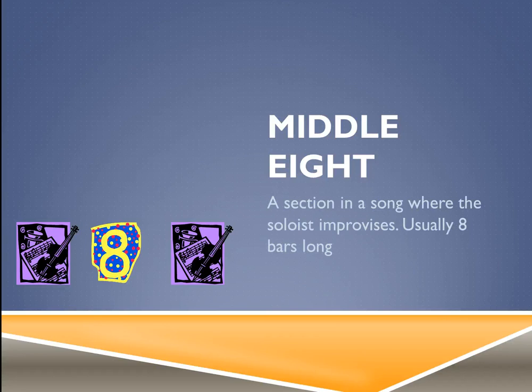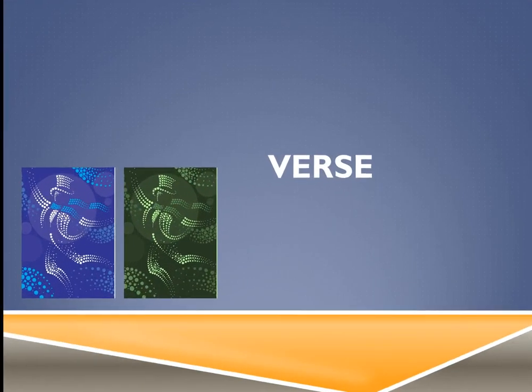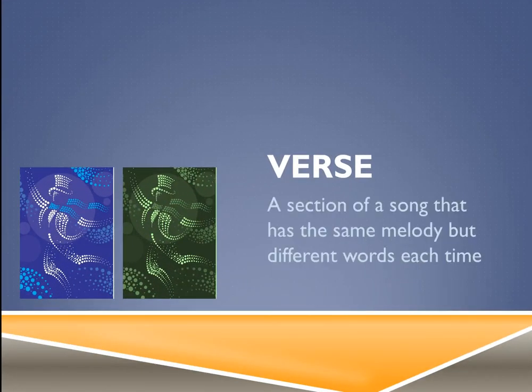Middle eight — I've got that little eight in the middle — is a section in a song where the soloist improvises, usually eight bars long. It's often found in jazz or rock music: that little bit where the guitar, saxophone, or keyboard does a solo that only goes for eight bars.